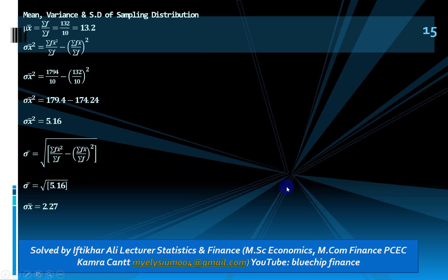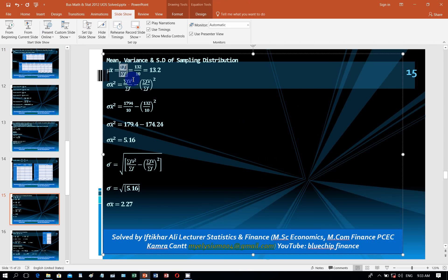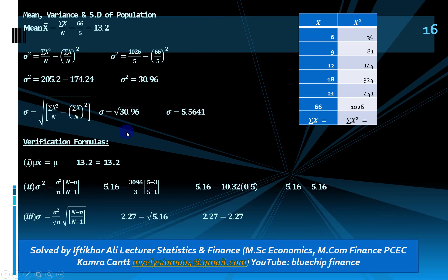Put these into the formulas: mean of sampling distribution = sum of fx̄ / sum of f = 13.2. Variance = sum of fx̄² / sum of f − (mean)² = 5.16. Standard deviation of the sample = √5.16 = 2.27. So mean of sample is 13.2, variance is 5.16, and standard deviation is 2.27.